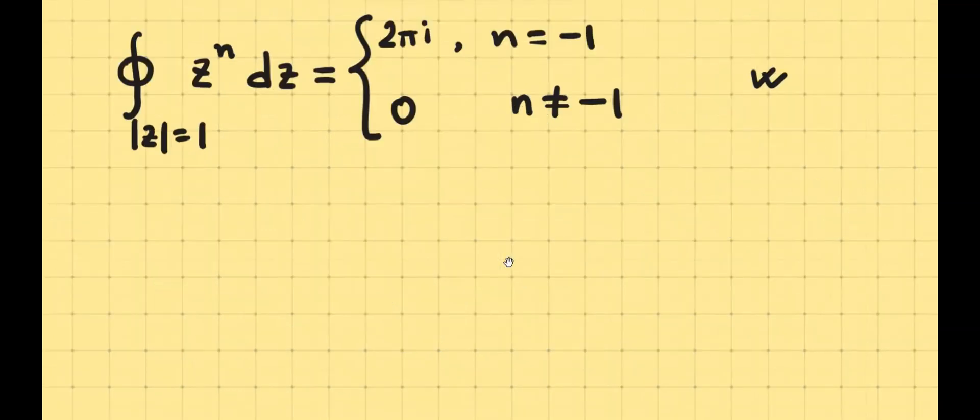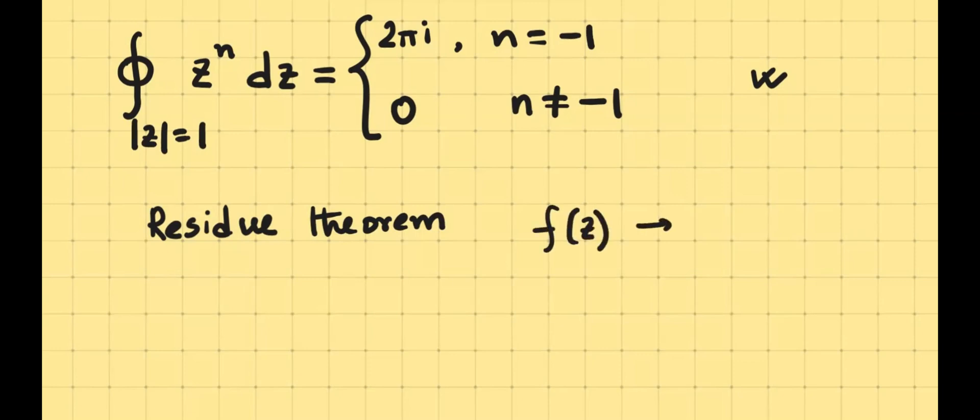Before finishing this, I just want to mention the fact that this can be understood by the help of Cauchy's residue theorem. That claims that for a meromorphic function, that means a function which have finite number of singularities, so if f(z) has finite number of singularities, finite singularities...